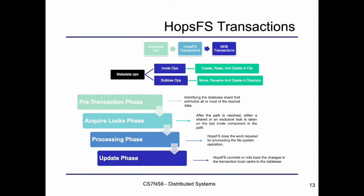The file system's metadata operations are encapsulated in HopsFS transactions that internally map to NDB transactions. HopsFS divides file system metadata operations into two categories: inode operations and subtree operations. Inode operations operate on a single inode, whether a file or directory, such as create, read, and delete a file. Subtree operations operate on a subtree of the namespace, such as move, rename, and delete a directory. Every HopsFS transaction runs in four phases: pre-transaction phase, lock-acquire phase, transaction processing phase, and a final phase to commit or roll back the transaction.